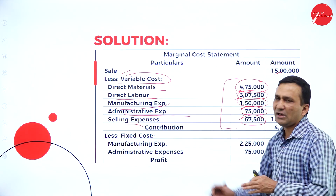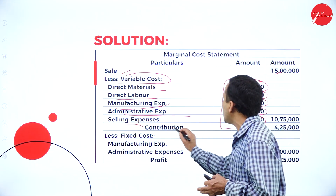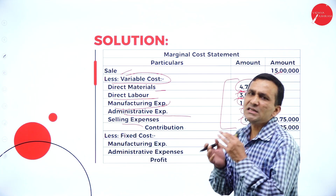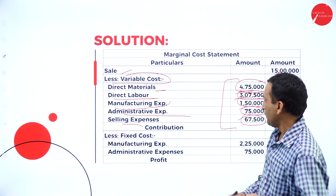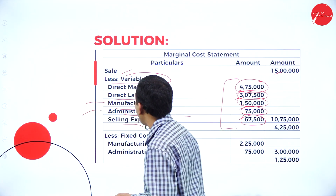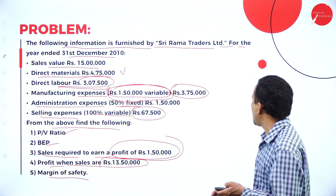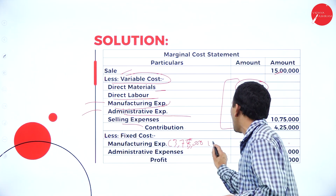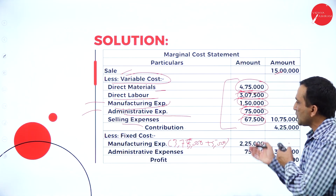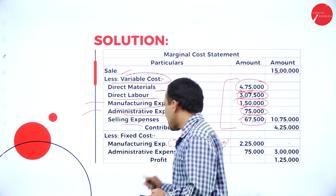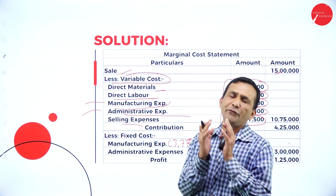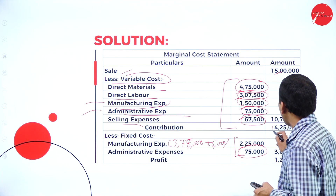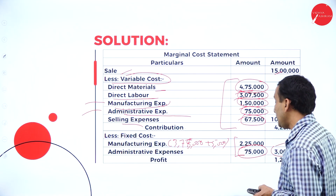After adding all variable costs, the total is 10 lakh 75,000 written in the outer column. From sales of 15 lakhs minus 10 lakh 75,000, we get a contribution of 4 lakh 25,000. Since the value basis is given, we use the value. Now we subtract fixed costs: manufacturing fixed expense is 3 lakh 75,000 minus 1 lakh 50,000 variable equals 2 lakh 25,000. Administration fixed is 75,000. Total fixed cost is 3 lakhs. From contribution of 4 lakh 25,000 minus 3 lakhs, we get a profit of 1 lakh 25,000.